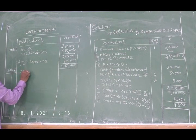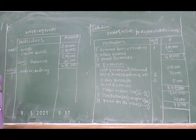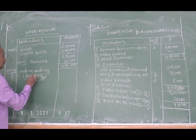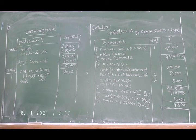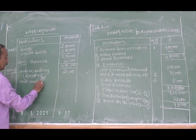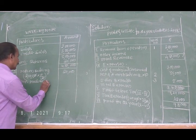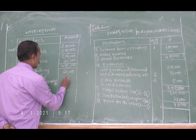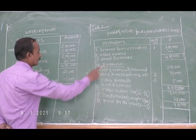Note number two — depreciation. Depreciation on building: building amount two lakh ten thousand at ten percent equals twenty thousand. Depreciation on machinery: one lakh fifty thousand at ten percent equals fifteen thousand. Total depreciation: thirty-five thousand. Note number two.